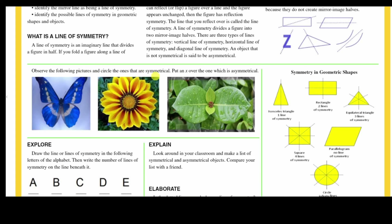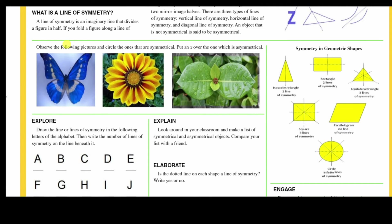Observe the following pictures and circle the ones that are symmetrical; put an X over the one which is asymmetrical. The butterfly is symmetrical — if we draw a vertical line, we could fold it that way. This shape is also symmetrical; we could get multiple lines of symmetry. This one could have a line of symmetry going this way. So we can see vertical lines, horizontal lines, and combinations across the shapes.